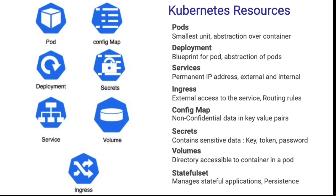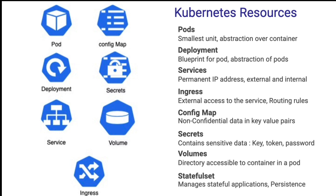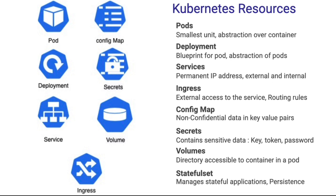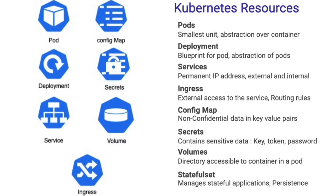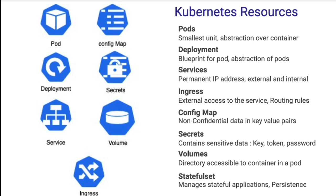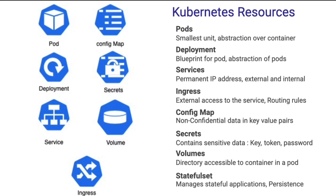Another resource is config map. If you want to store non-confidential data, you can store it in a config map in Kubernetes. It's a key-value pair that stores data in plain text. For sensitive data like tokens or passwords, we cannot store them in config map — we need a secured place. That's where Kubernetes secrets come in. We can encode sensitive data using base64 and store it in secrets.